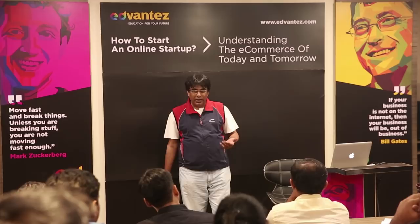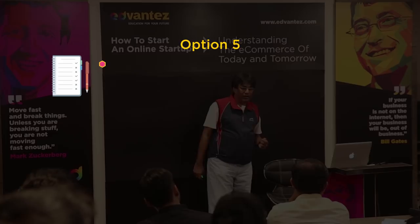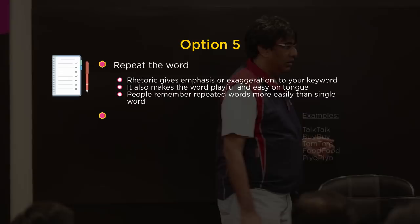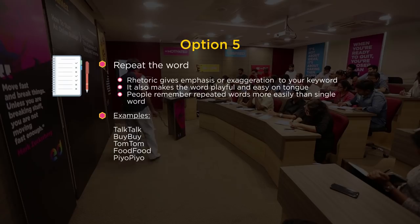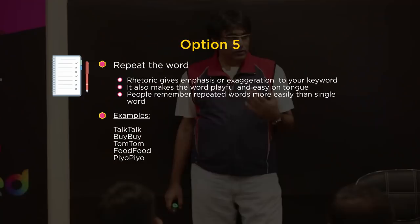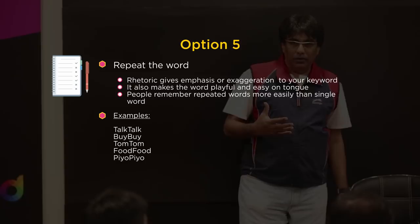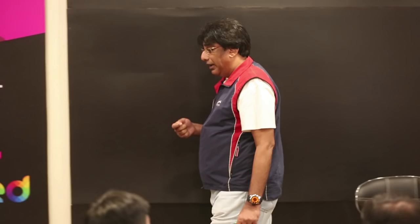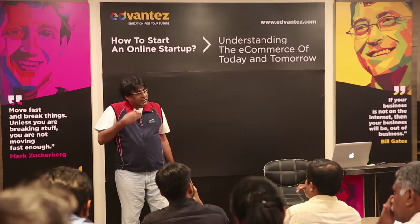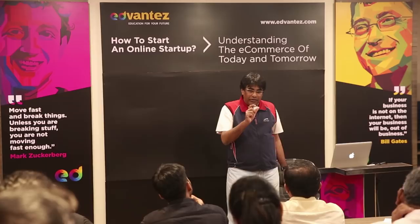Option five is to repeat a word — like Talk-Talk, Bye-Bye, Tom-Tom, Food-Food. When you repeat a word, it becomes very playful on the tongue. It gives a rhythm to your brand. People generally tend to remember these kinds of brands easily because we are wired to speak that way.